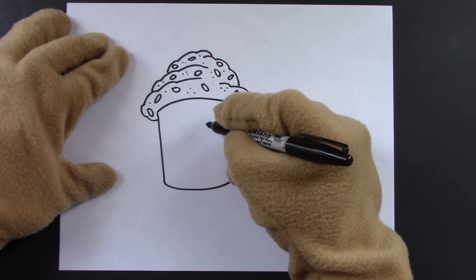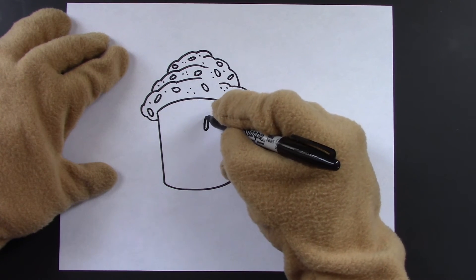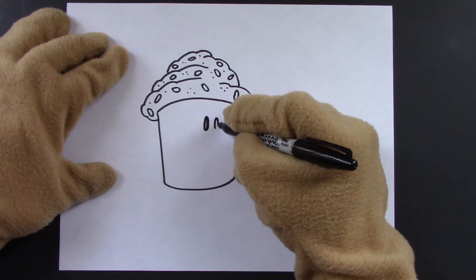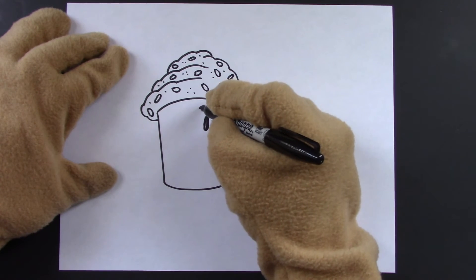Now we'll give two skinny ovals for eyes. Very skinny. There we go. That looks good.